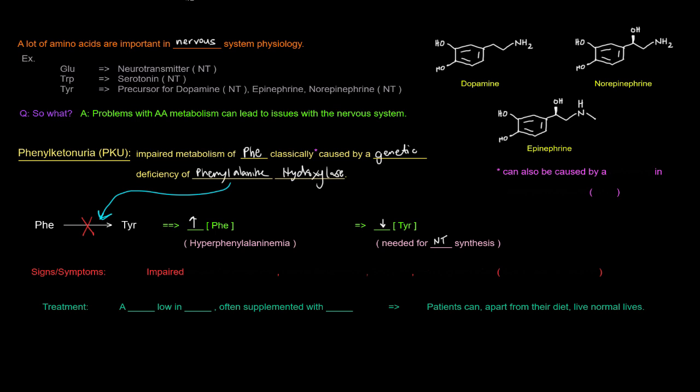There are signs and symptoms of phenylketonuria or PKU. They include impaired neurodevelopment, mental retardation, seizures, and even actually hypopigmentation due to a lack of melanin because melanin, the pigment that darkens skin, comes from tyrosine as well. All these are signs and symptoms of basically having a lack of tyrosine.